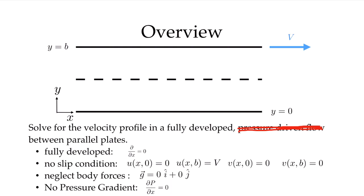We will again have the no-slip condition, but it is slightly different now. The bottom wall is not moving, so u and v at the bottom wall are zero. The top wall is moving in the x direction with velocity V, so the no-slip condition means that at y equals b, the u velocity must equal V. The v velocity is still zero because it's not moving in that direction. We are going to neglect body forces, meaning the acceleration due to gravity is zero, and there is no pressure gradient — the pressure is constant.